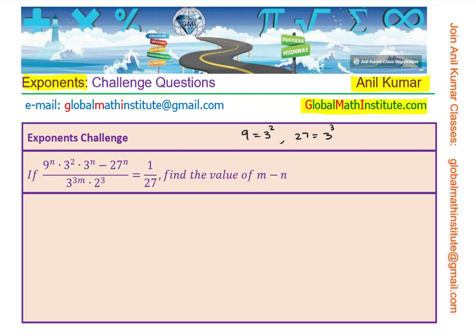Let's rewrite the question. We have 9 to the power of n — I could write this as 3 to the power of 2, to the power of n — that is 9, times 3 squared, times 3 to the power of n, minus 27, which is 3 to the power of 3, to the power of n, divided by 3 to the power of 3m times 2q.